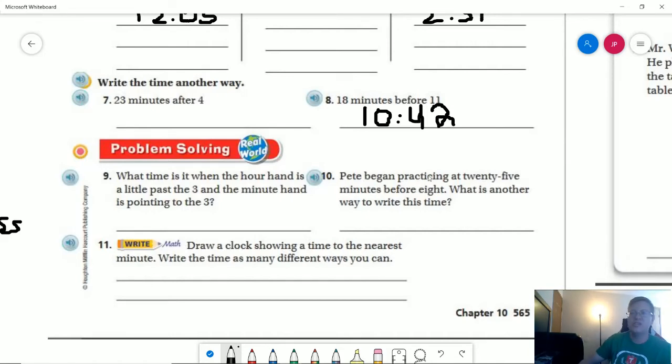These are usually going to start with something like this. So Pete began practicing at 25 minutes before eight. And then we might say how long he practiced for, what time did he finish. But this would be finding the first step of that before we would actually use it to help us answer a problem solving question.